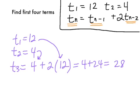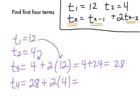The last term we need to find is t₄. Again, we take tₙ₋₁, or the last term, which in this case is t₃, or our 28. Then we add to that two times tₙ₋₂. Two terms before where we are is our t₂. So that's where your 4 will come in. Our 4th term is now 28 plus 8 for 36.